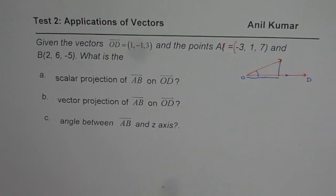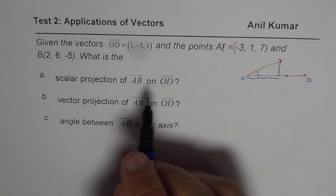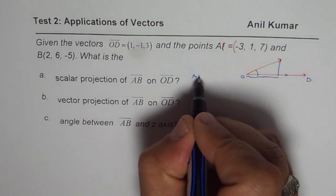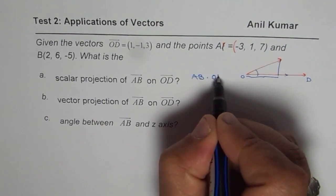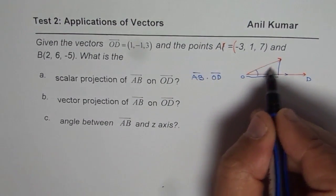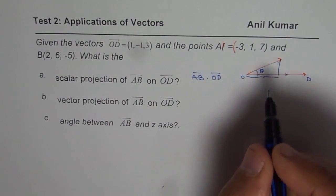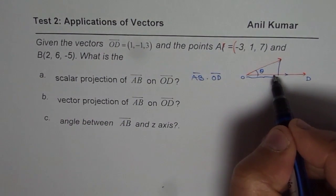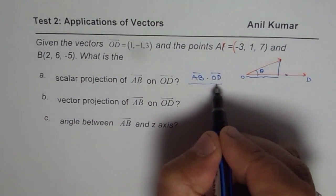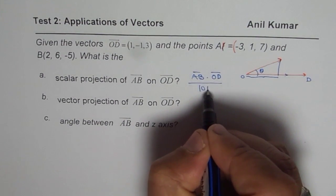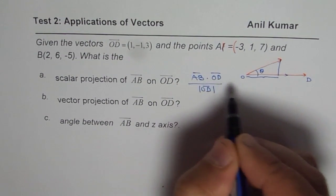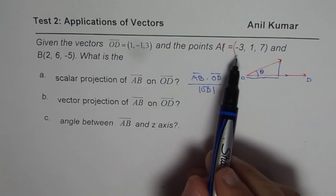You can easily find scalar projection by using the formula AB dot OD. So that is their dot product. So AB cos θ, if this is angle θ, then AB cos θ is your scalar projection. So if you divide by the magnitude of OD, then you get scalar projection. So that is the formula you can always apply.